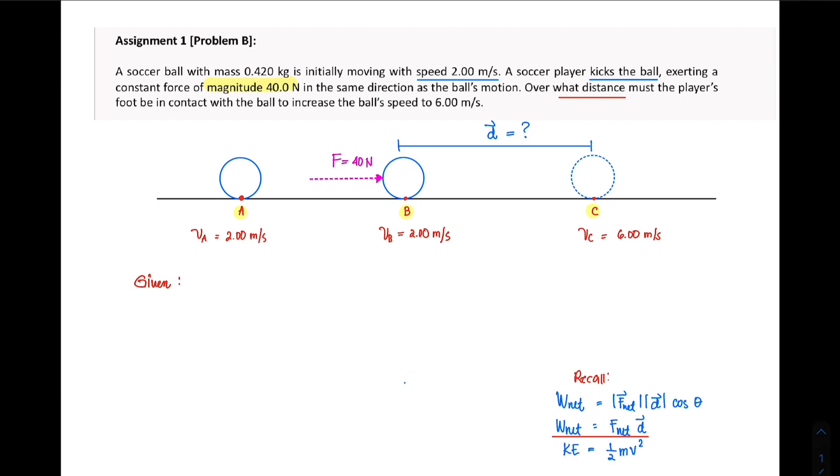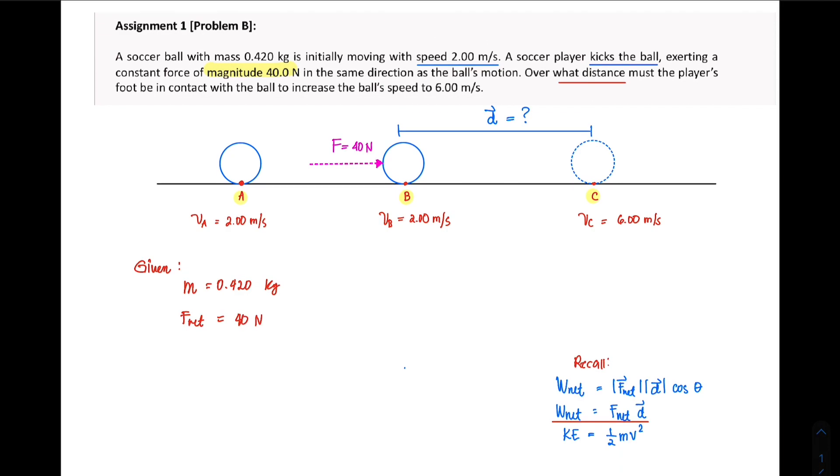I'm just going to write the given in the problem which will be helpful. We have the mass of the ball which is 0.420 kilograms. We have also the applied net force at point B which is 40 newtons. And then we are looking for our displacement over which the force must act on that ball.